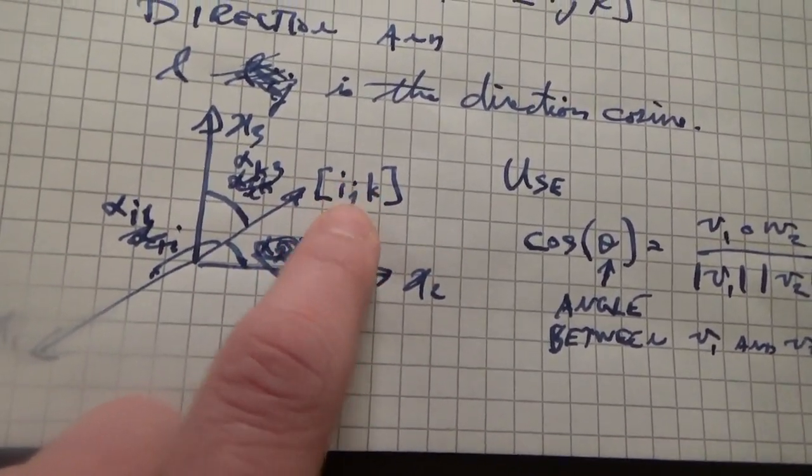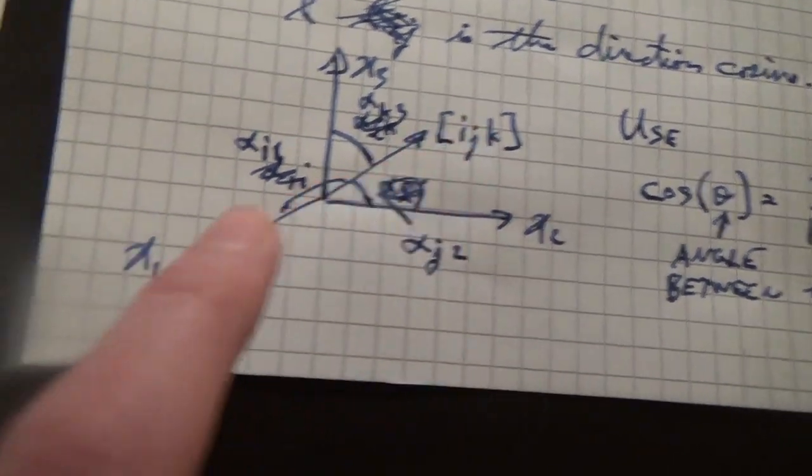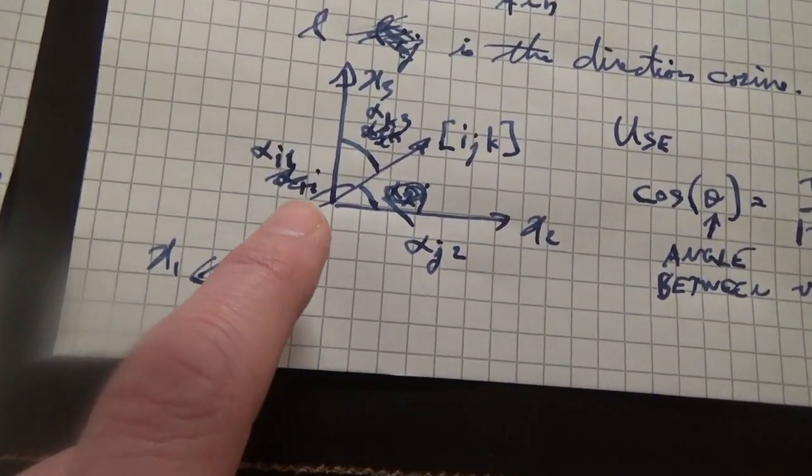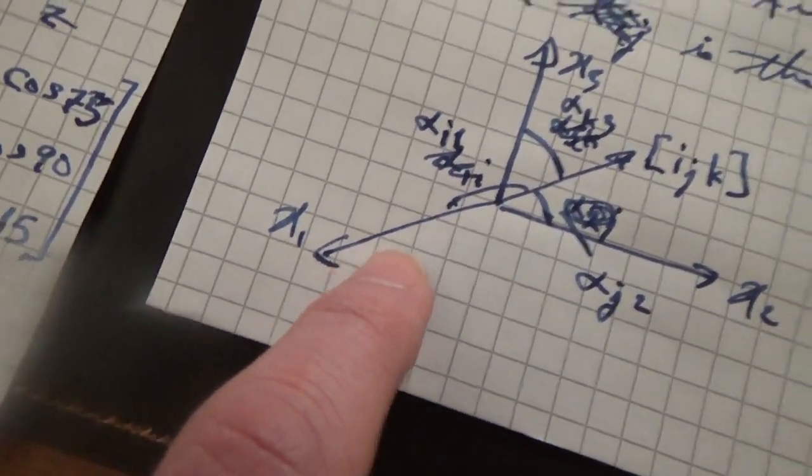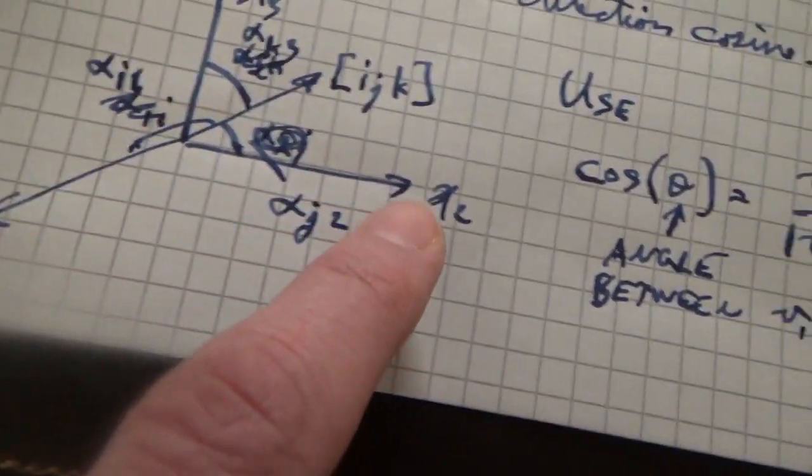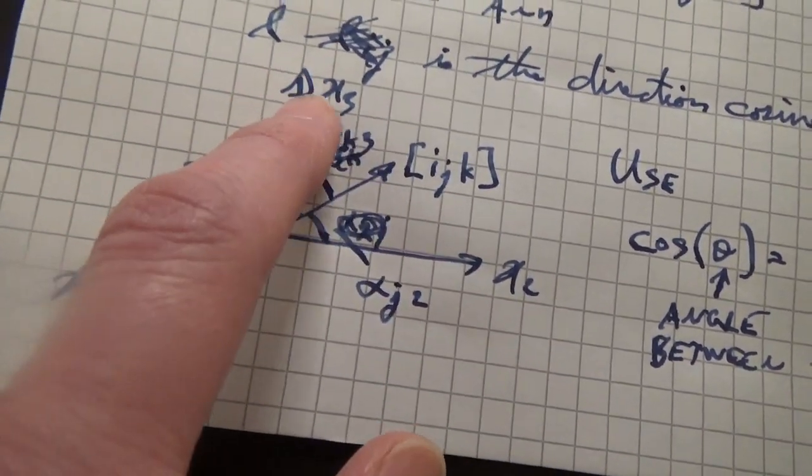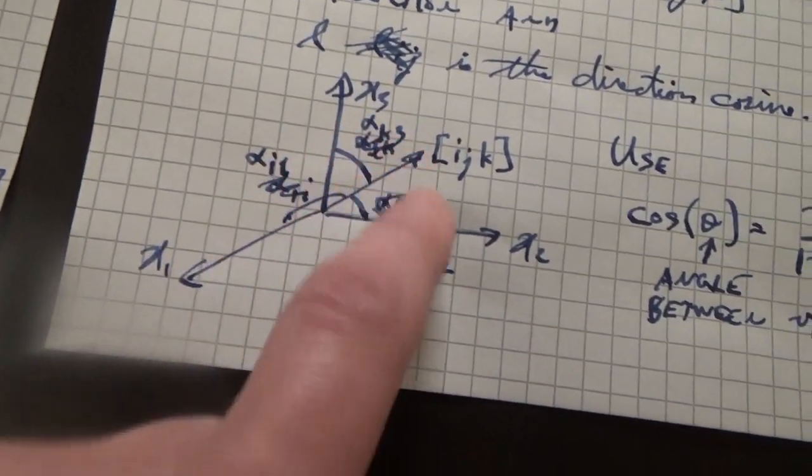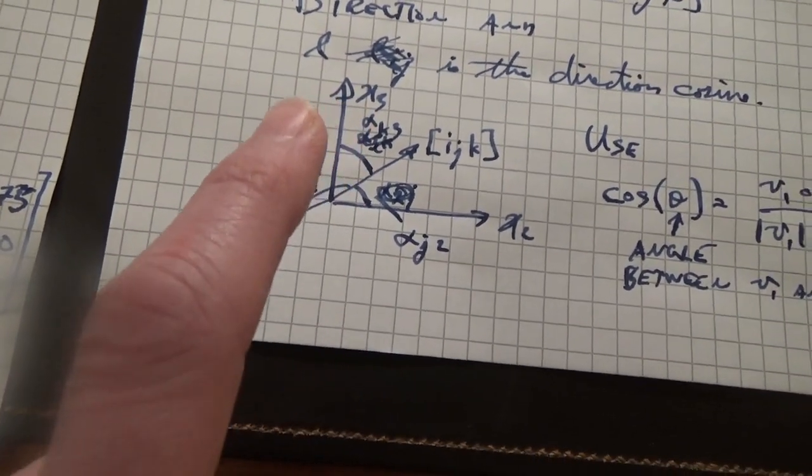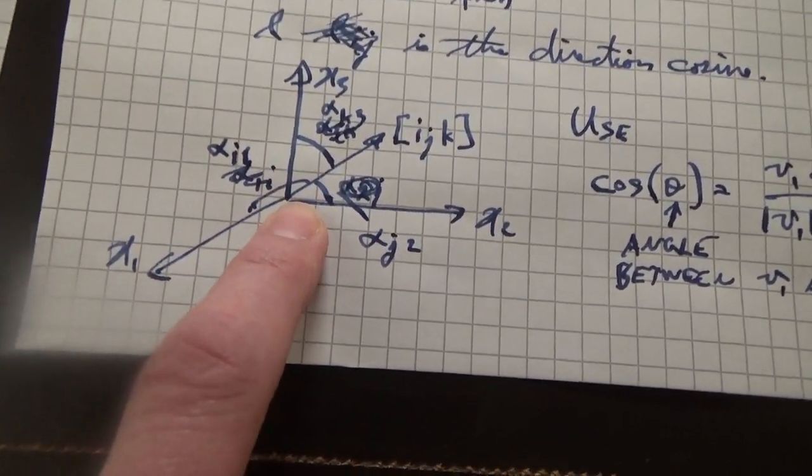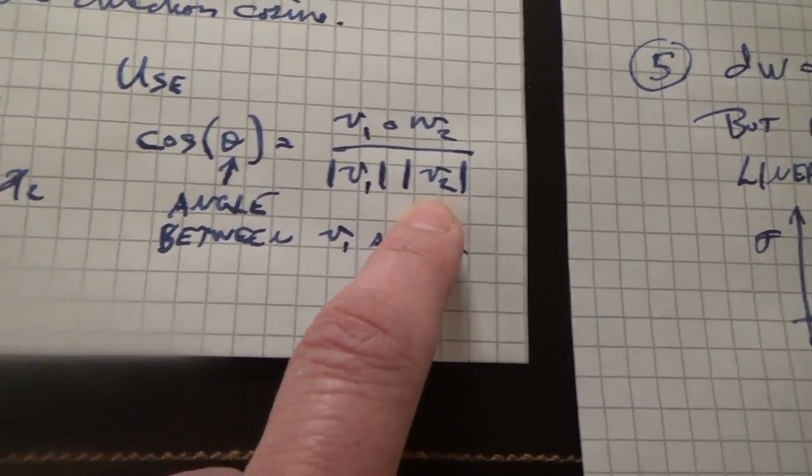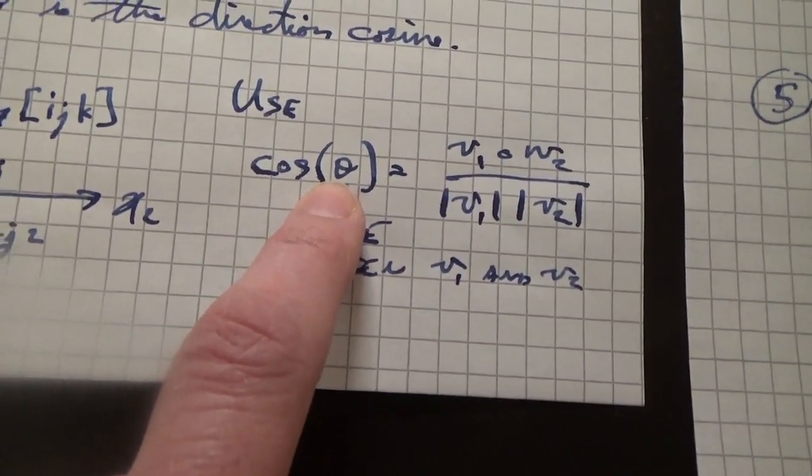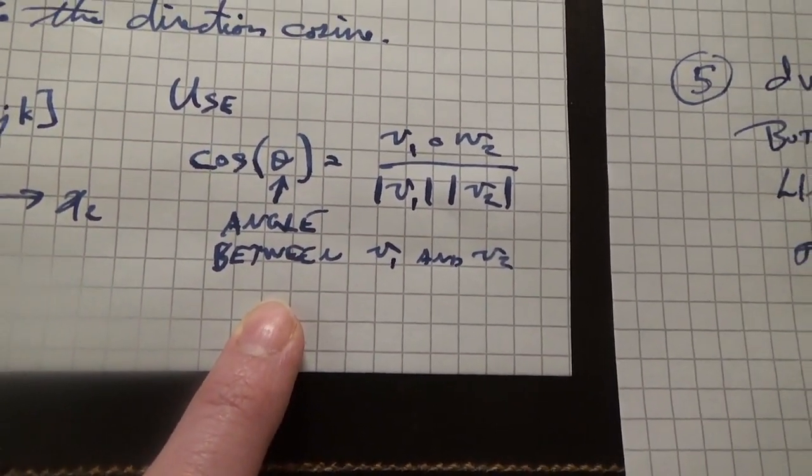So we have the i j k direction and we have our x1, x2, x3 direction. The direction cosines are the angles between the x1 and the direction of interest, the x2 and the direction of interest, and the x3 and the direction of interest. So those are our alphas. The simplest way to get the angle is to use the trigonometric relation that the dot product of two vectors divided by the magnitude of those two vectors gives you the cosine of the angle between them. Vectors are your friend.